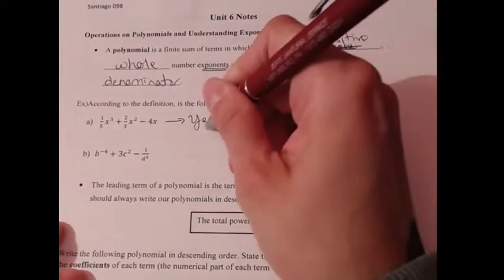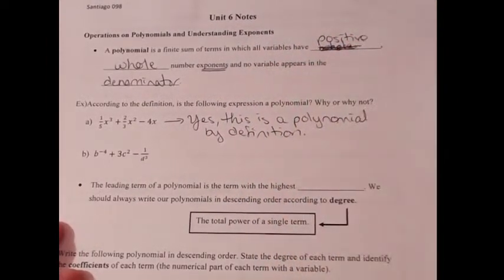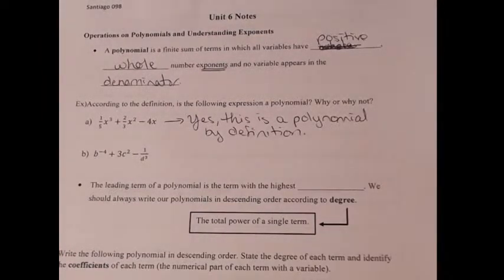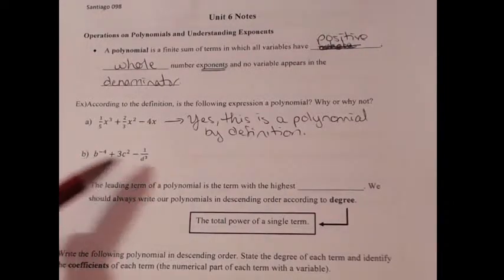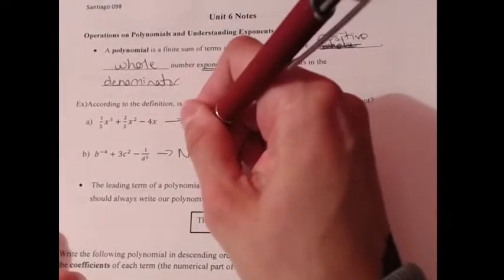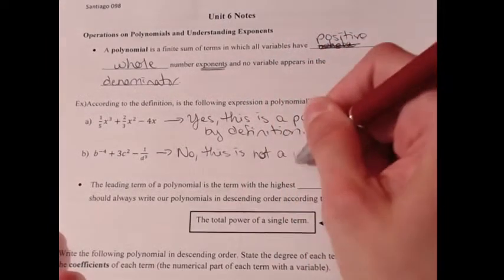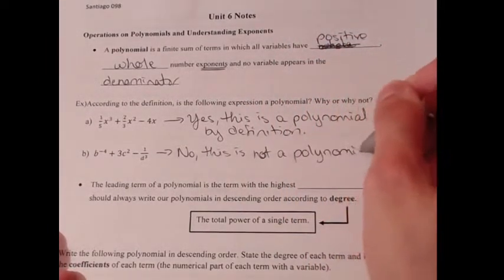By definition, that first expression qualifies. Now take a look at the second example: b to the negative fourth — right there it fails. It's not a polynomial. We also have one over d to the third power, so it fails in two locations. You only need it to fail once for it to not be defined as a polynomial. This is just an expression — not a polynomial.